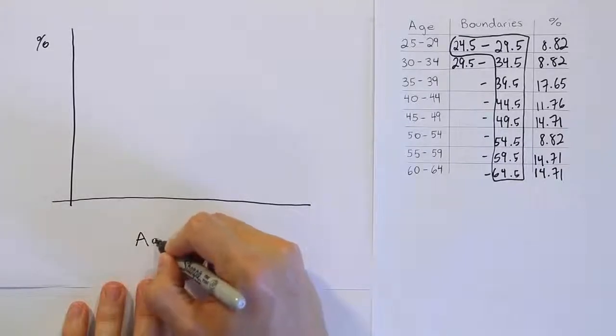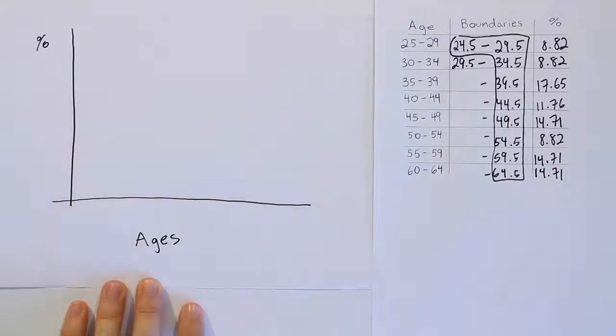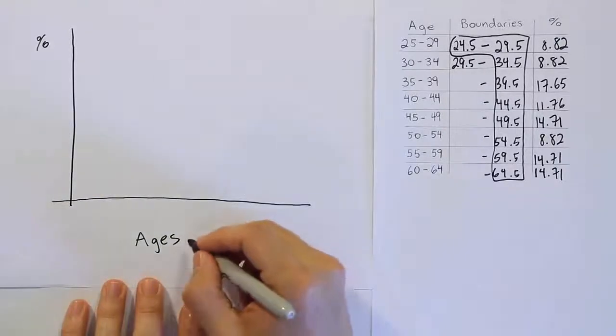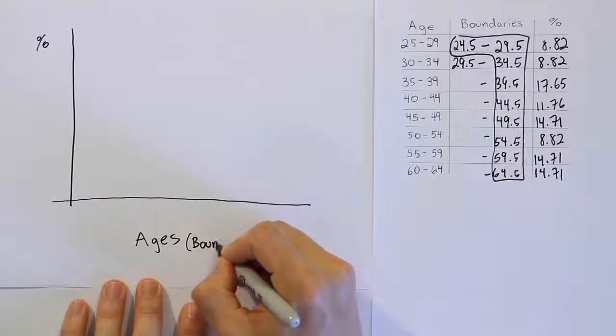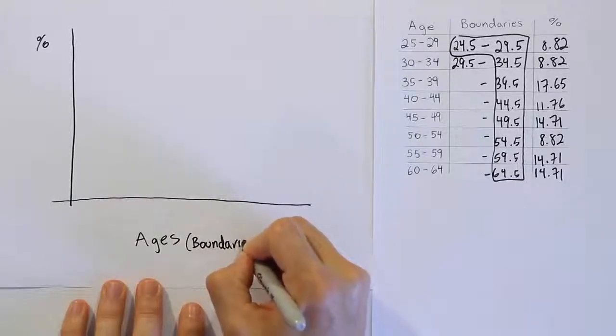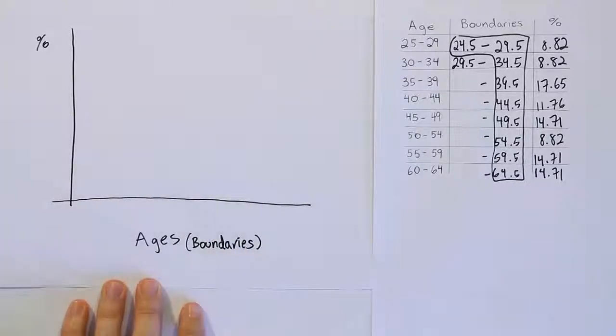I'm going to label this axis the percents and this axis the boundaries. But since the boundaries represent ages in this problem, I'm going to write ages there so we remember what they're supposed to be. Remember generically they're the class boundaries, so I'll put boundaries next to it as well so that you don't forget that's what goes there for other problems.